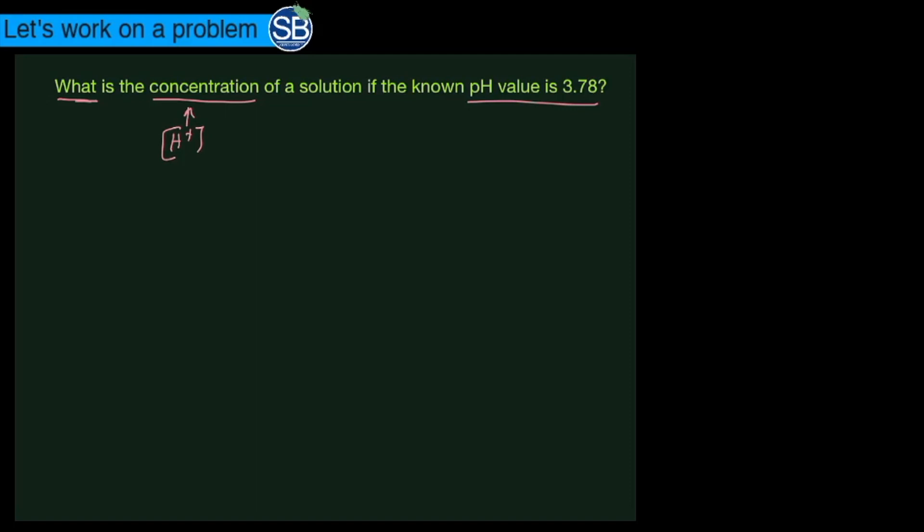This video we're just going to figure out how to convert the pH value into the hydrogen ion concentration. The main thing you want to do is rewrite the stuff that we already have in terms of the givens. In terms of givens, we know that the pH value is equal to 3.78.